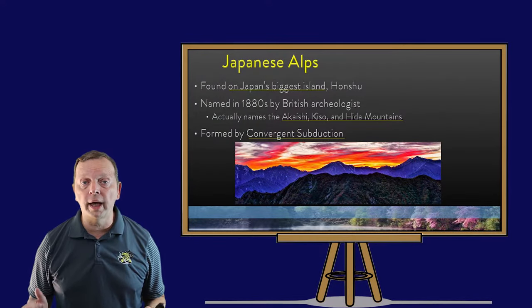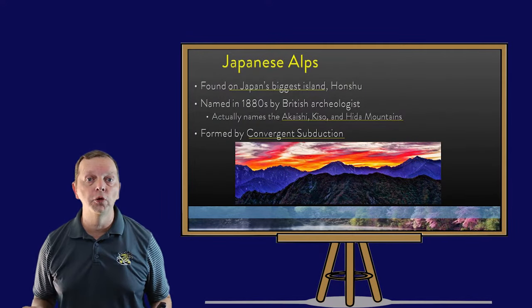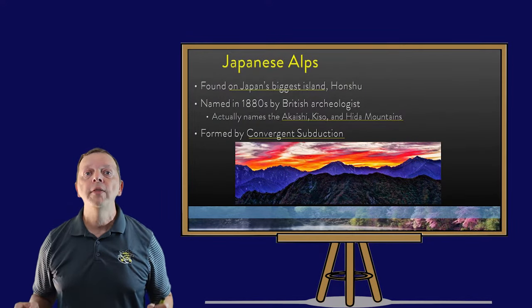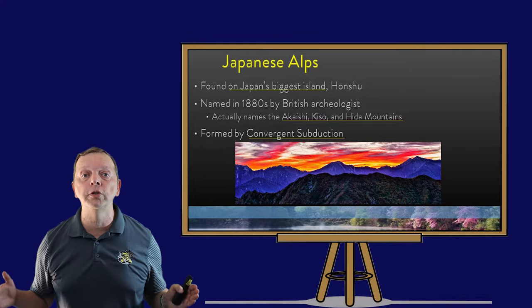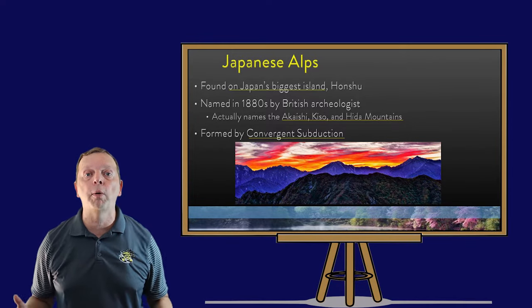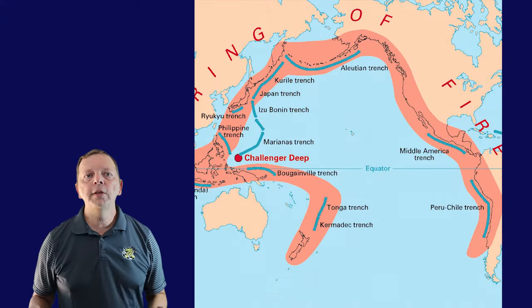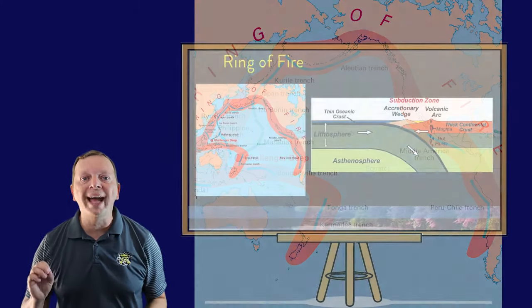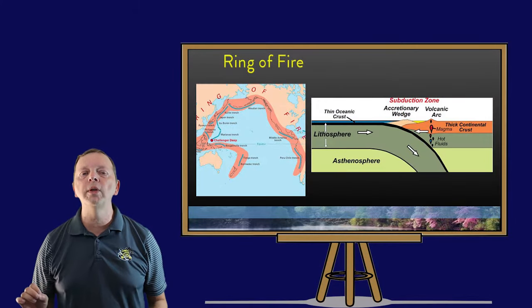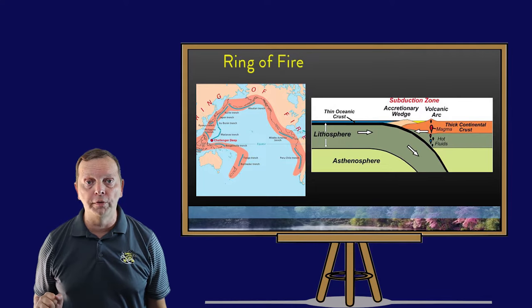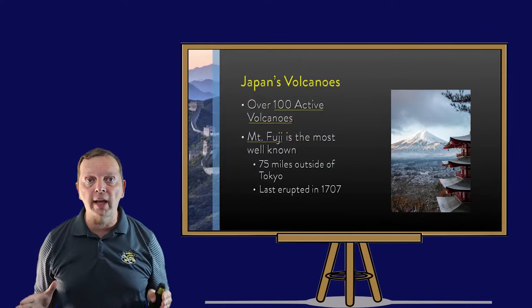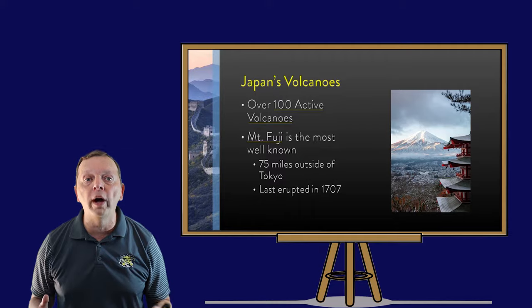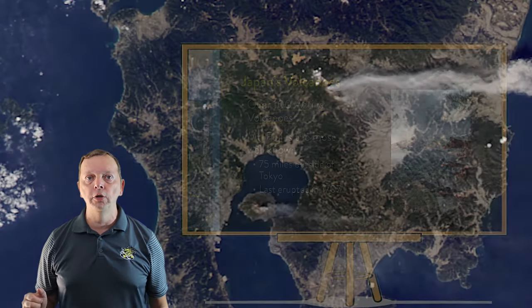Unlike the Korean Taibak and Chinese mountains, which were formed by convergent folding, the Japanese Alps were formed by convergent subduction, because Japan is part of the Ring of Fire — not that Ring of Fire, but this one: the subduction zone stretching around the Pacific Ocean, home to 90% of all the world's earthquakes and 75% of its volcanoes. Japan alone has 100 active volcanoes.